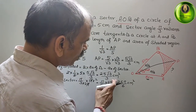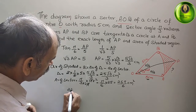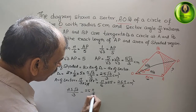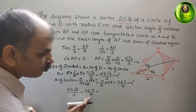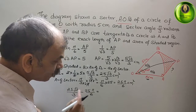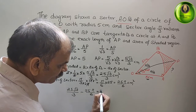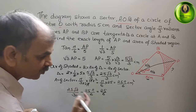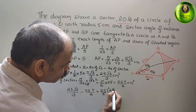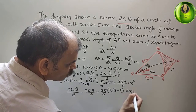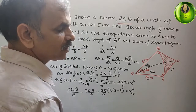Now subtract: area of shaded region = 25√3/3 − 25π/6. Taking LCM of 6 and factoring out 25/6, we get (25/6)(2√3 − 5) cm². This is the area of the shaded region.